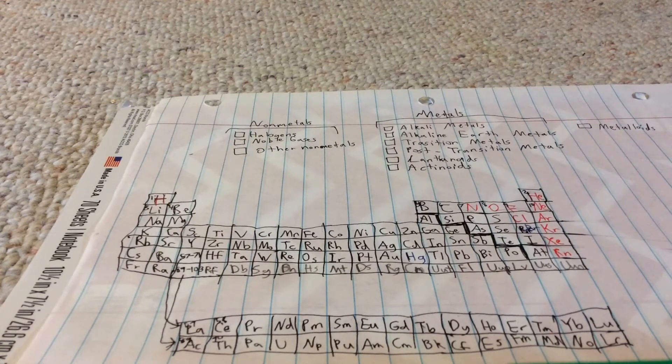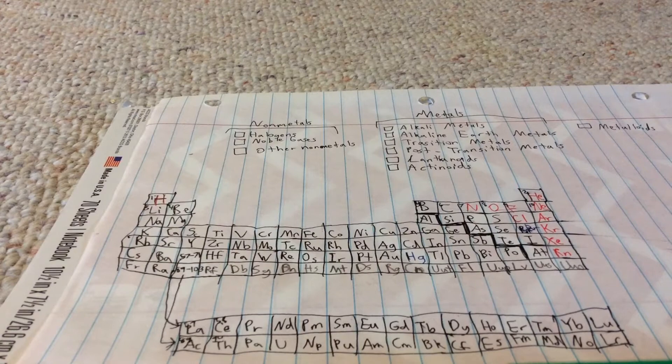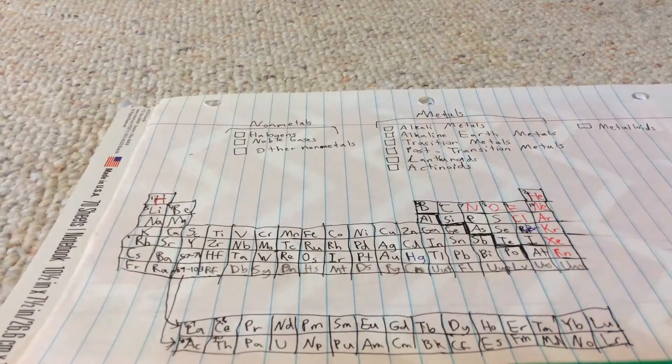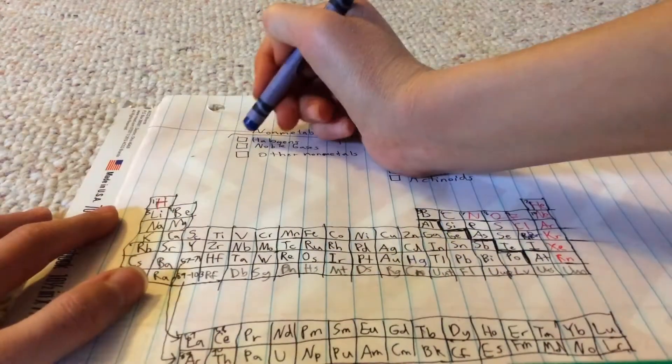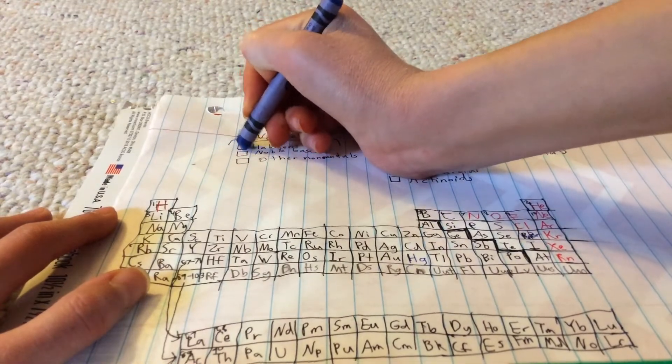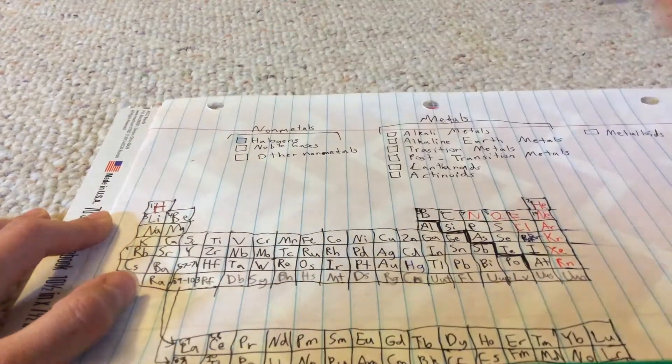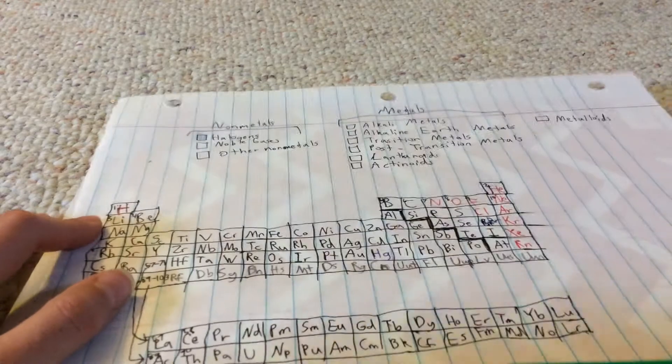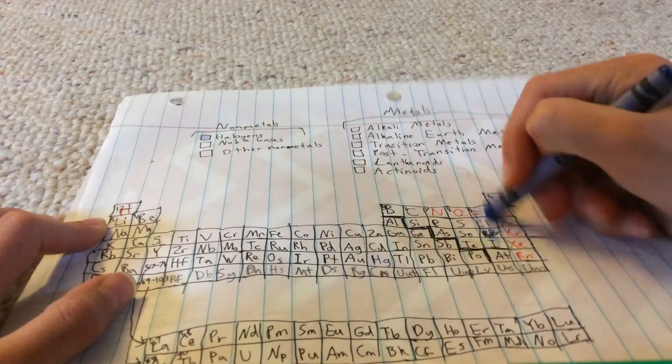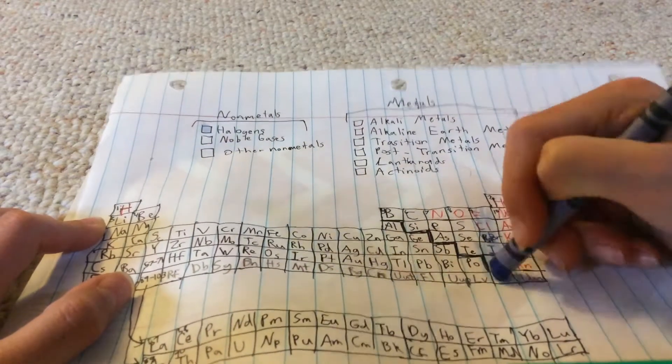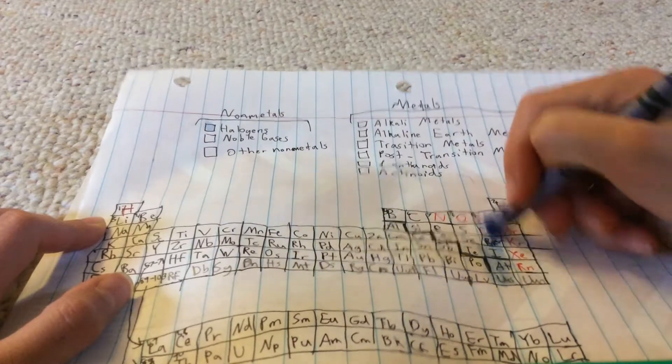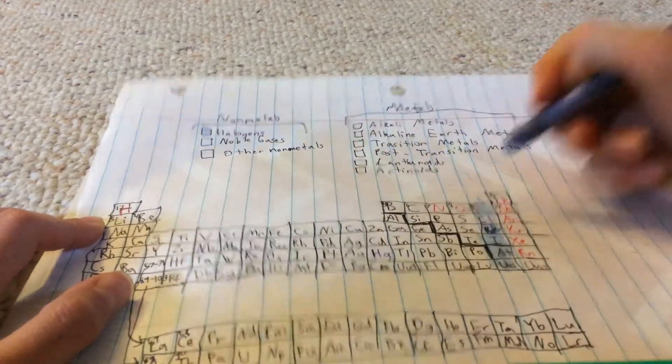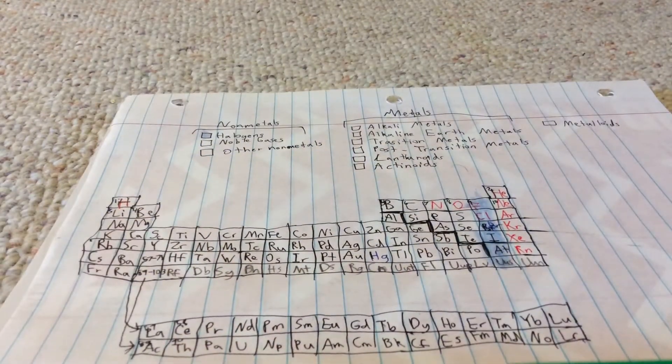Our first one will be halogens. We're gonna make them all on this color right here, which is cornflour. I'm just gonna color that in, pretty hard to see, but the halogens are all this. For some reason I always do the halogens first.